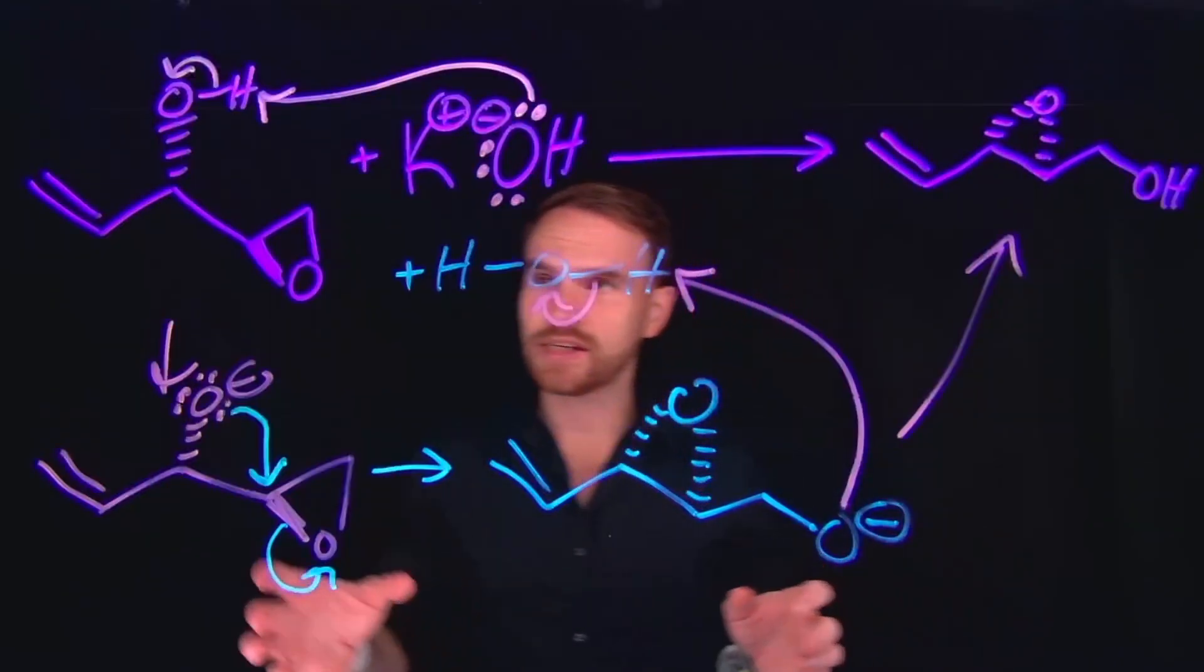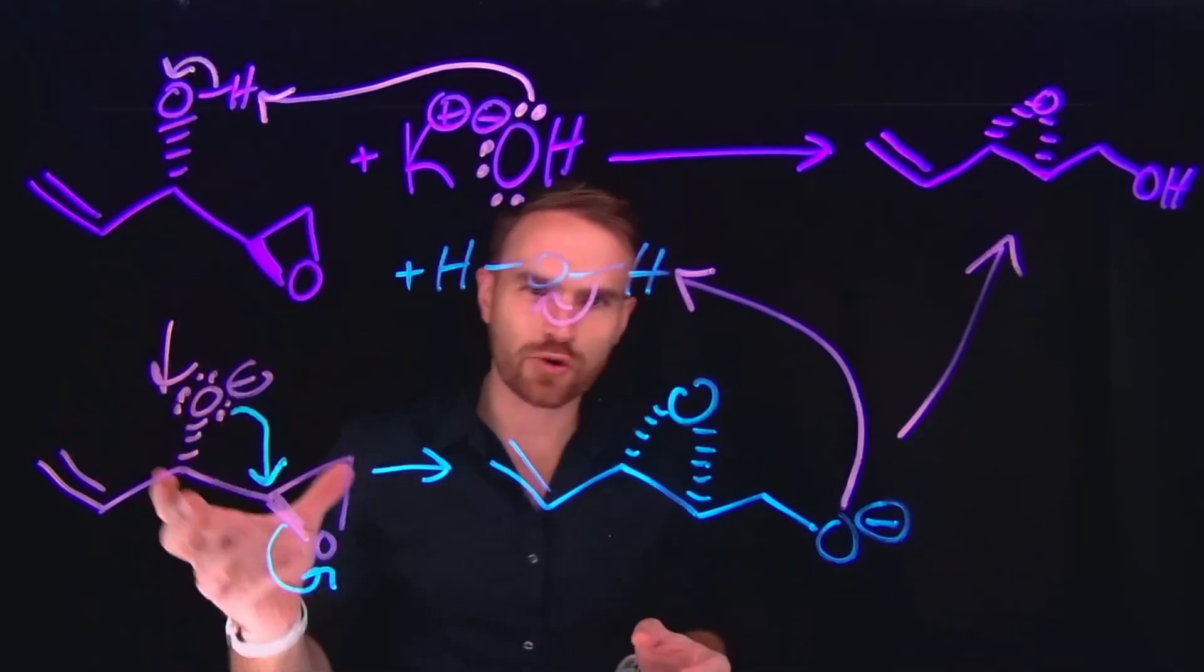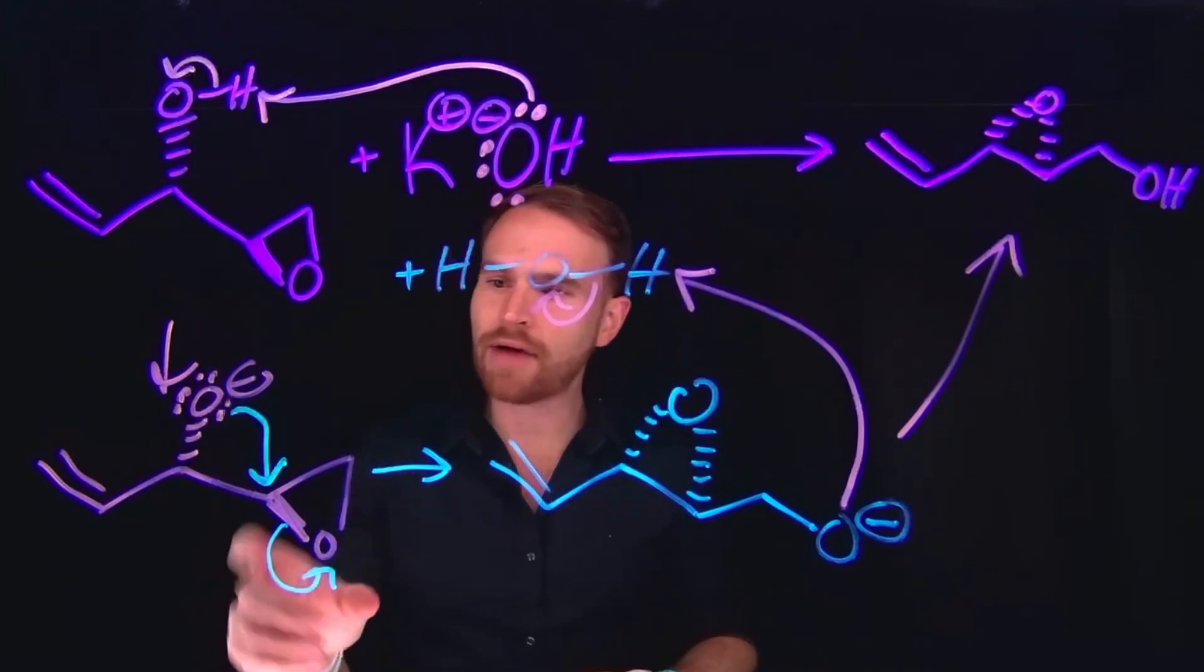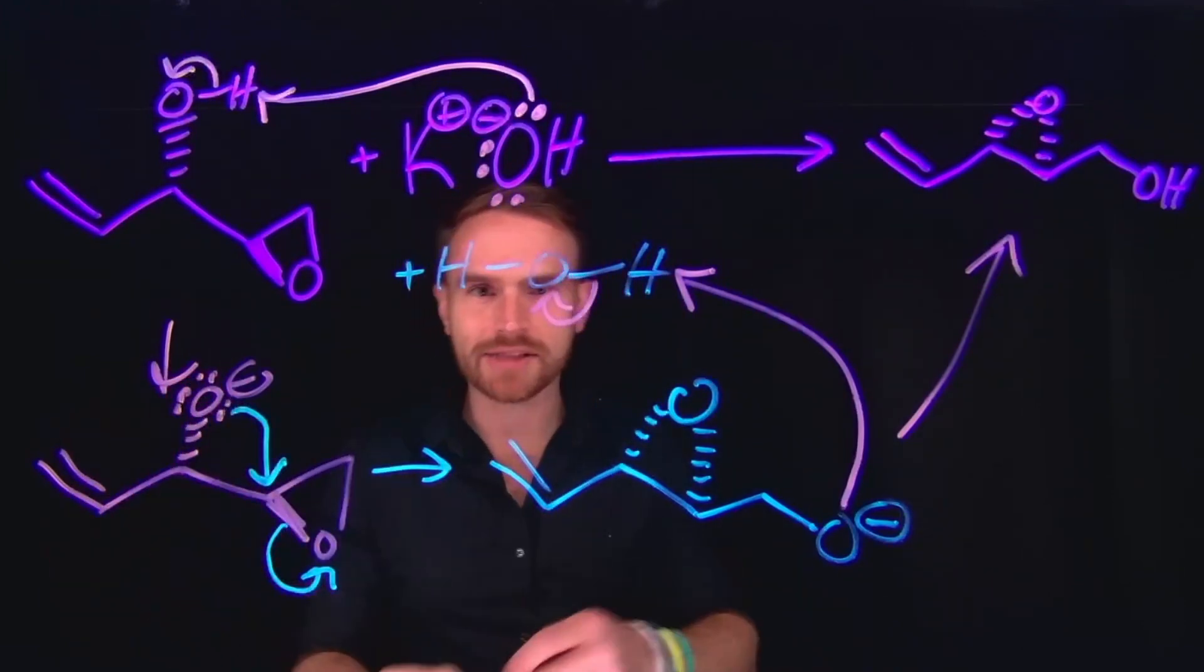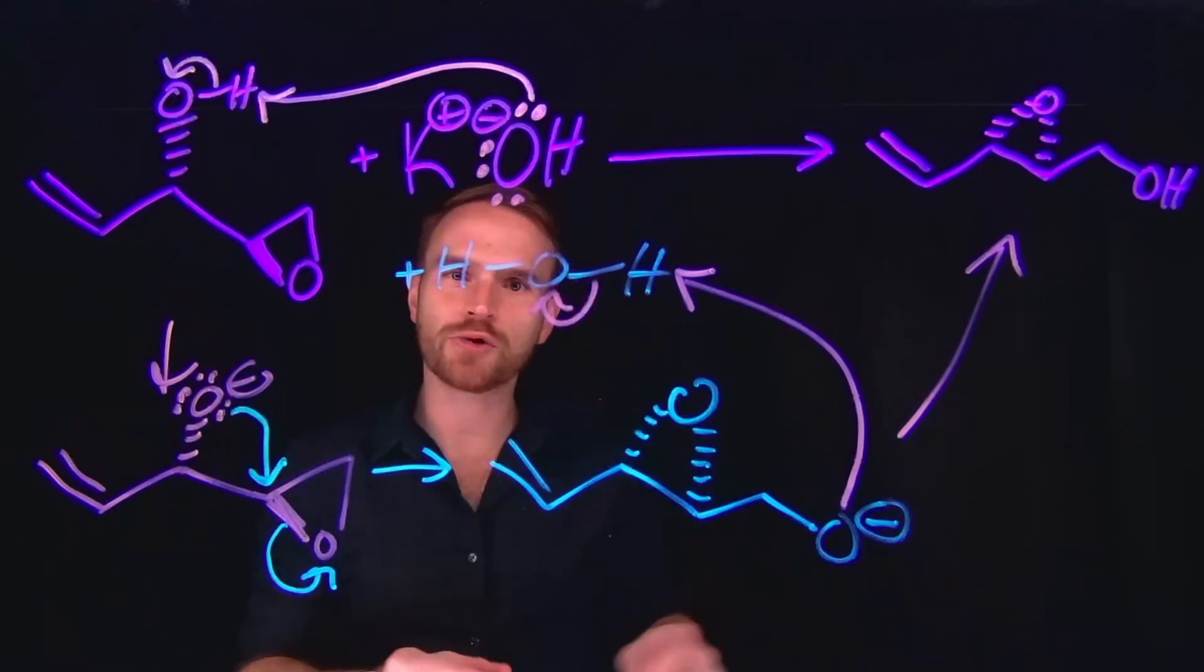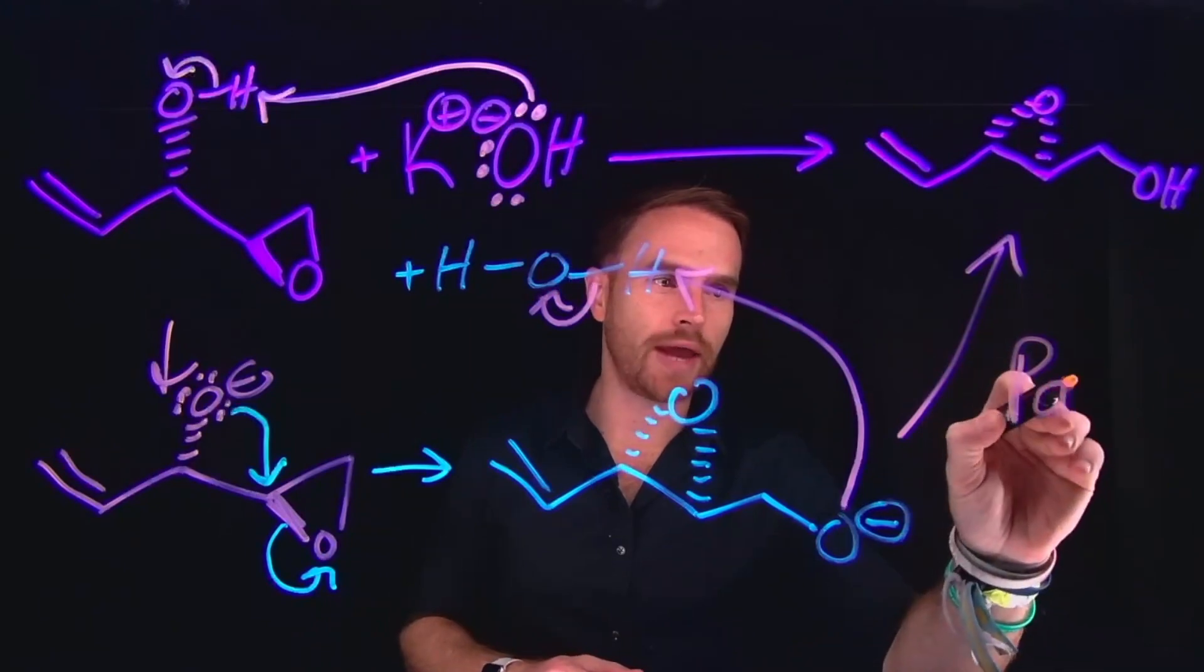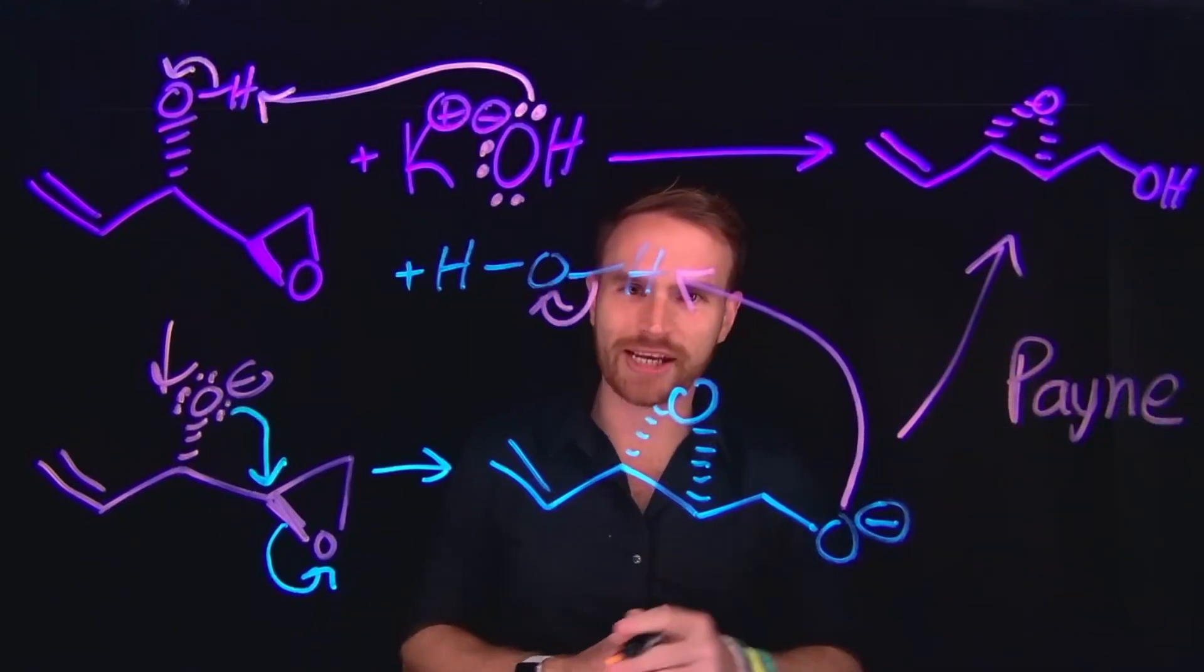Now importantly for these reactions, we only had these two adjacent groups that can interact with one another. However, there are examples when you have multiple epoxides or alkoxides as part of the same molecule that you could even see a cascade effect occurring. And again, this is an example of what's known as the Payne rearrangement.